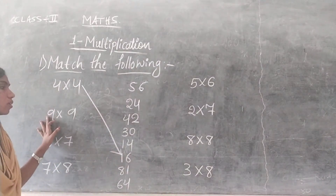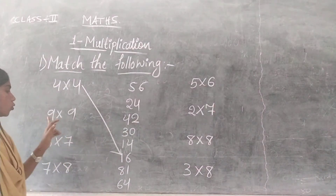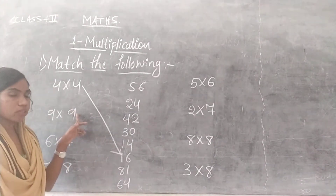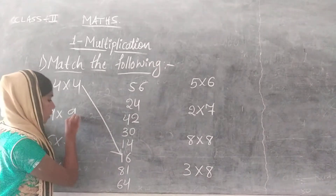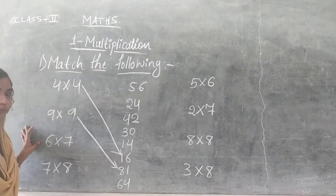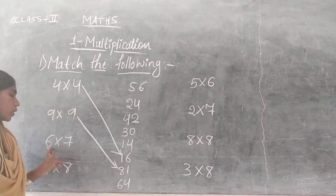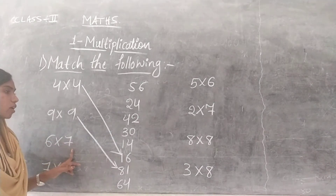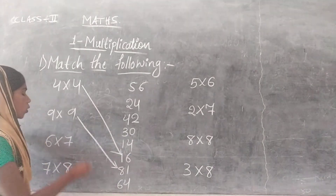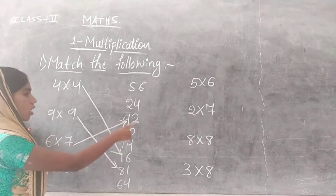The second one is 9 into 9. Read the 9 times table up to 9: 9 9s are 81. Match for 81. The next one is 6 into 7. Read the 6 times table up to 7: 6 7s are 42. Match for 42.